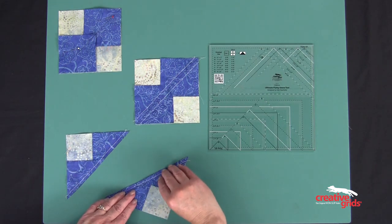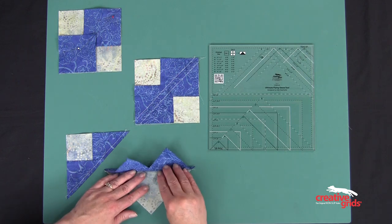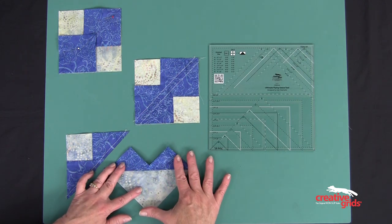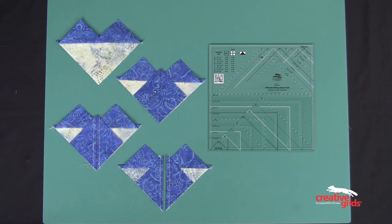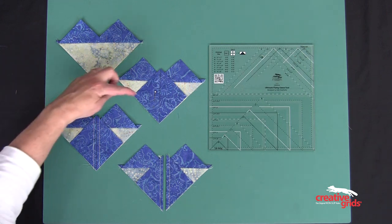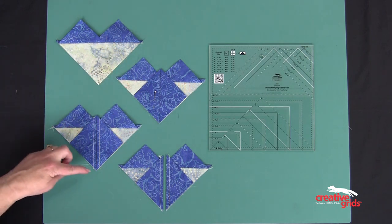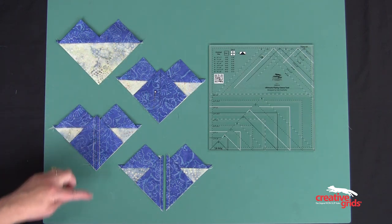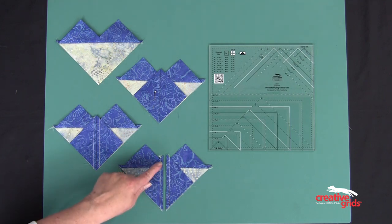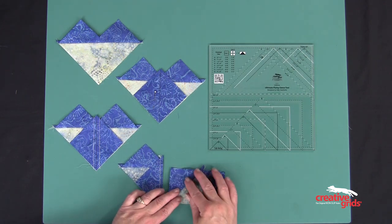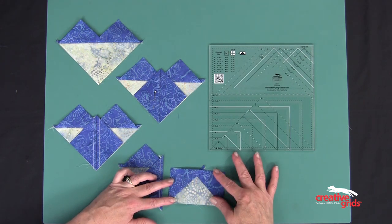Fold back the smaller triangles to make a heart. Press towards the smaller triangles. Place the square on each of the hearts as shown. Sew a quarter inch from the line on both sides of the line. Cut on the line and fold back the small triangles. Use the ultimate flying geese tool to trim to size.